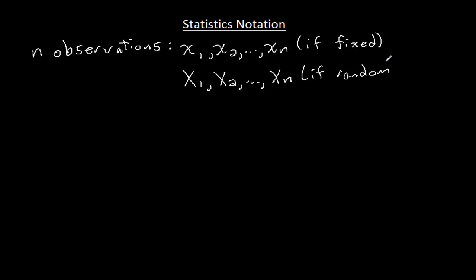Because I can either have an experiment run and then get the results - that's my n observations - or I can think theoretically: if I get n observations, what am I going to do with them? If I'm doing it more theoretically, and don't assume that I actually have numbers there, then I'm going to use these capital letters.